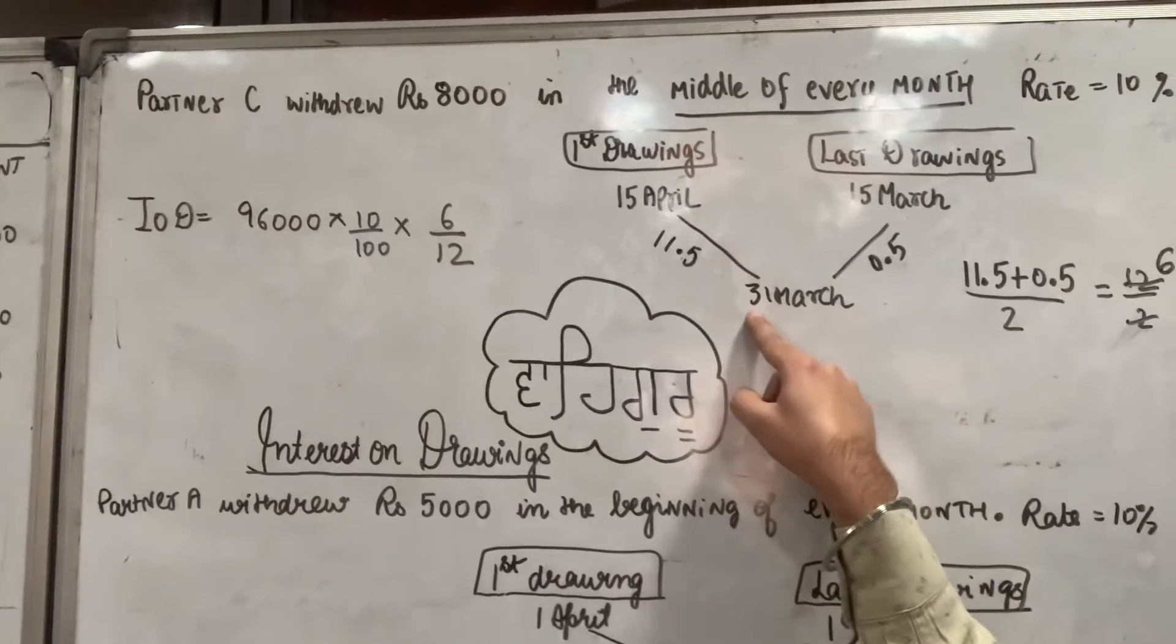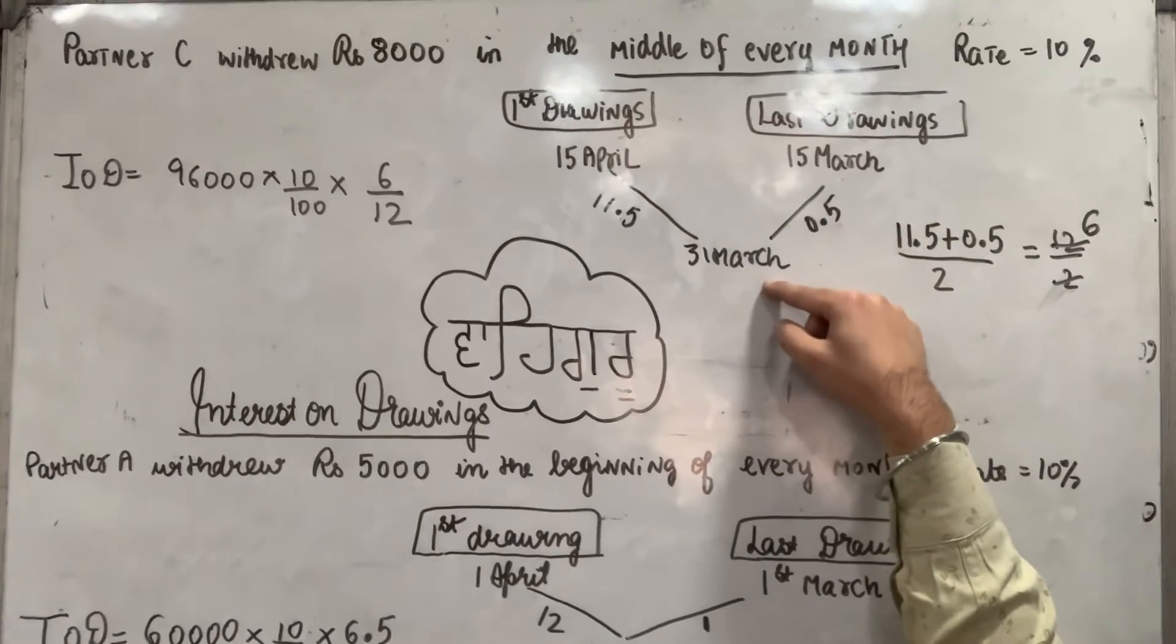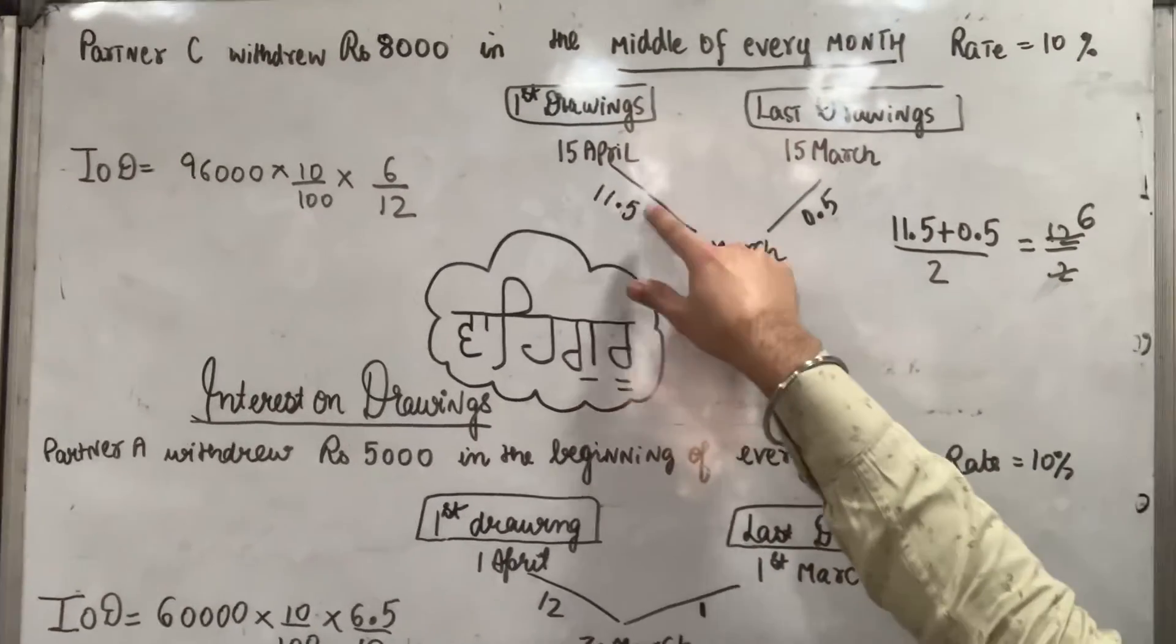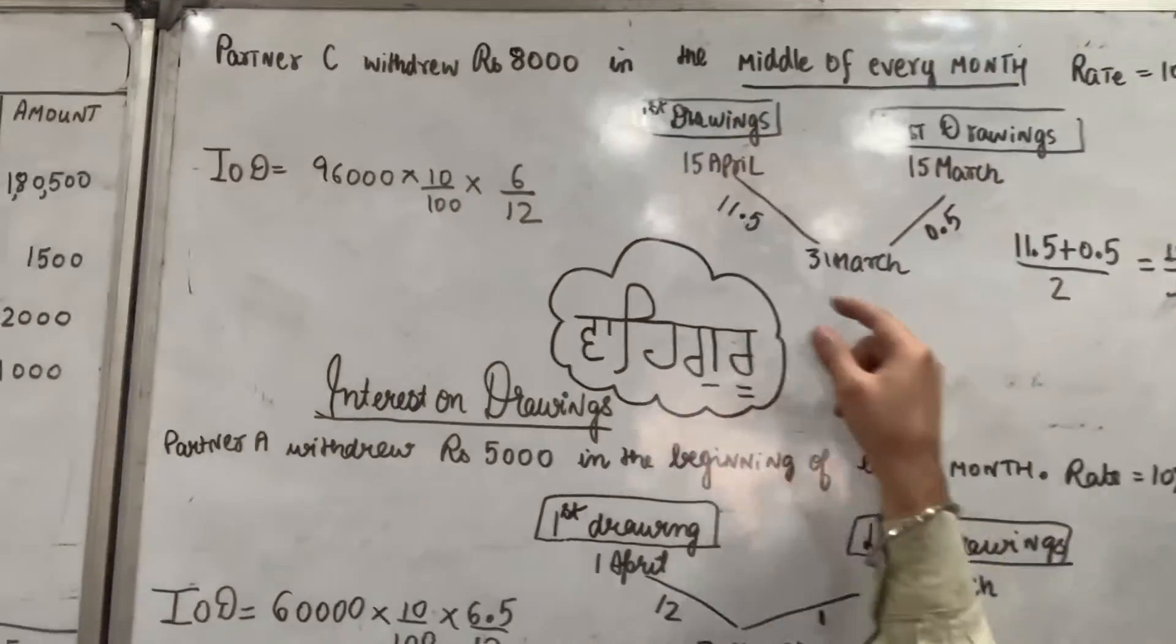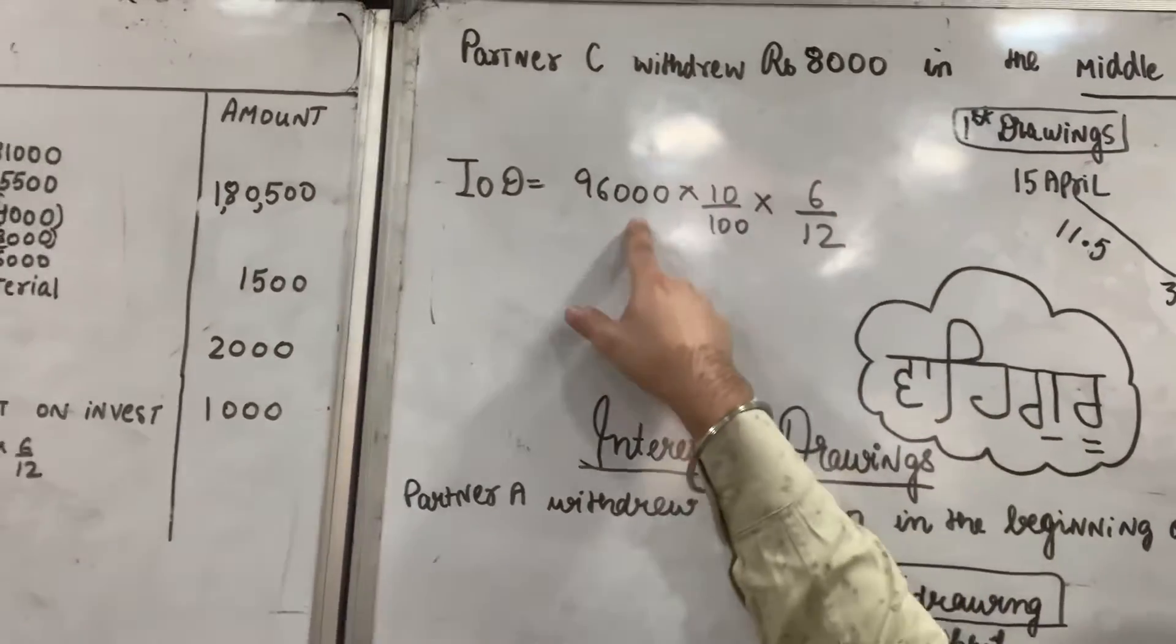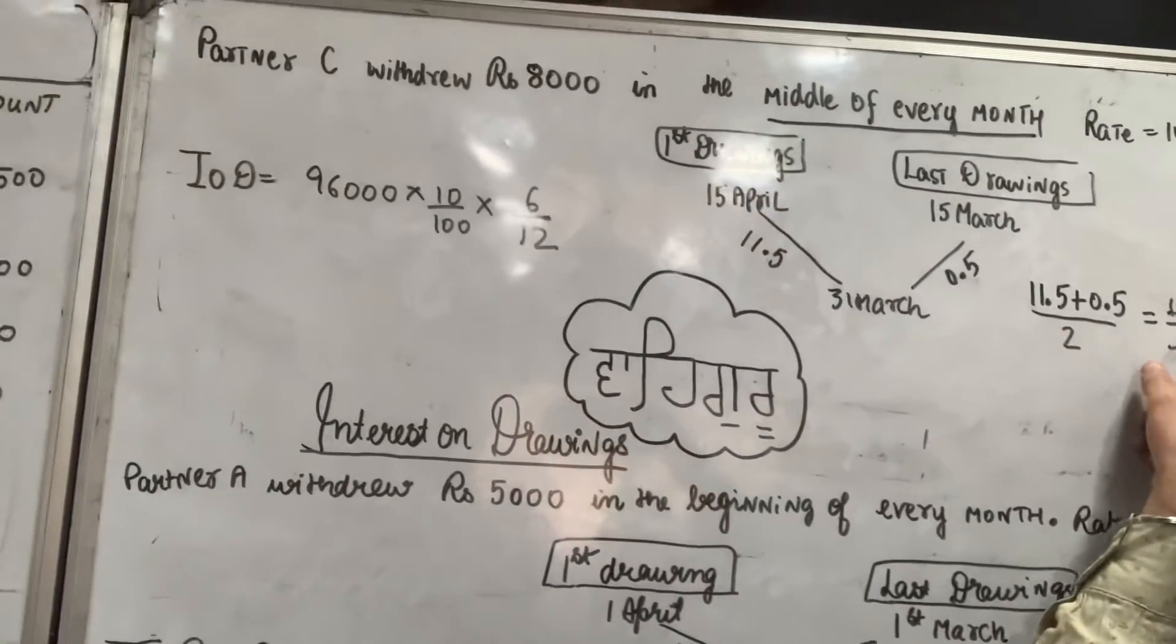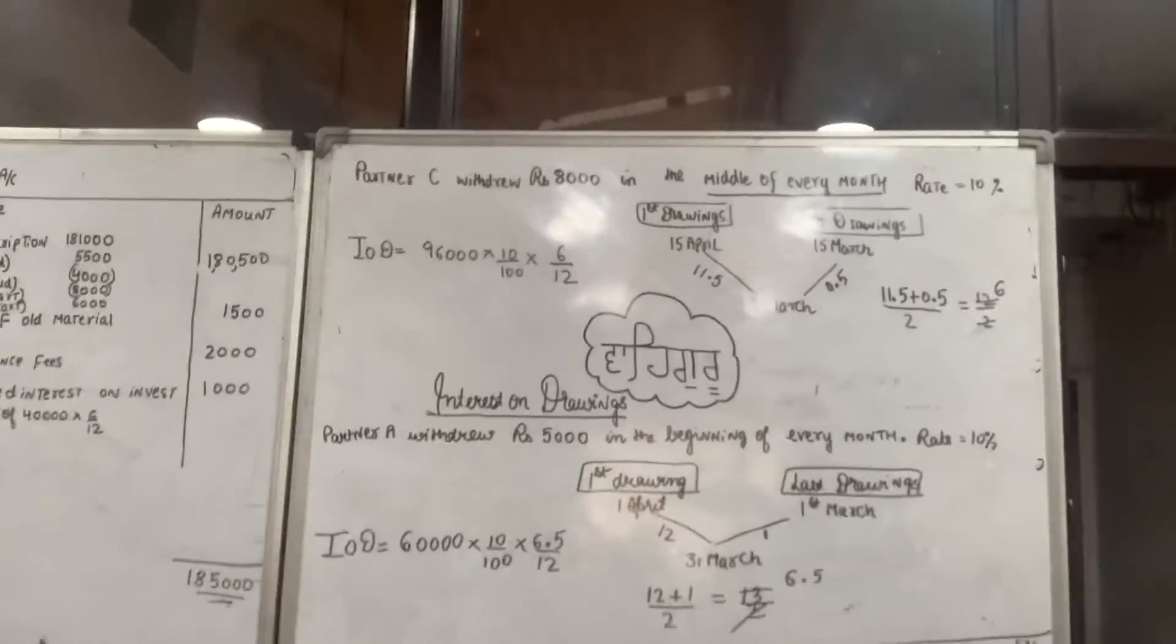15th April se leke 30th March tak kitne months? Saadhe 11 months. Or 15th March se leke 30th March tak kitne months? Aadha month, matlab 0.5 months. Phir in dono ki average nikali. Average kaise nikala? Average period: 11.5 upon 2, that is 5.75. Or average period 11.5 upon 2 upon 12. To isko solve karke IOD aaye.